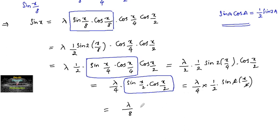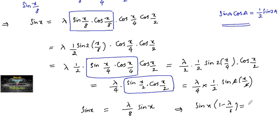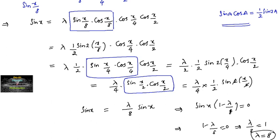So the right-hand side is λ/8 · sin(x), and the left-hand side is sin(x). We can write sin(x) · (1 − λ/8) = 0, so either sin(x) = 0 or 1 − λ/8 = 0, which implies λ/8 = 1, giving λ = 8.